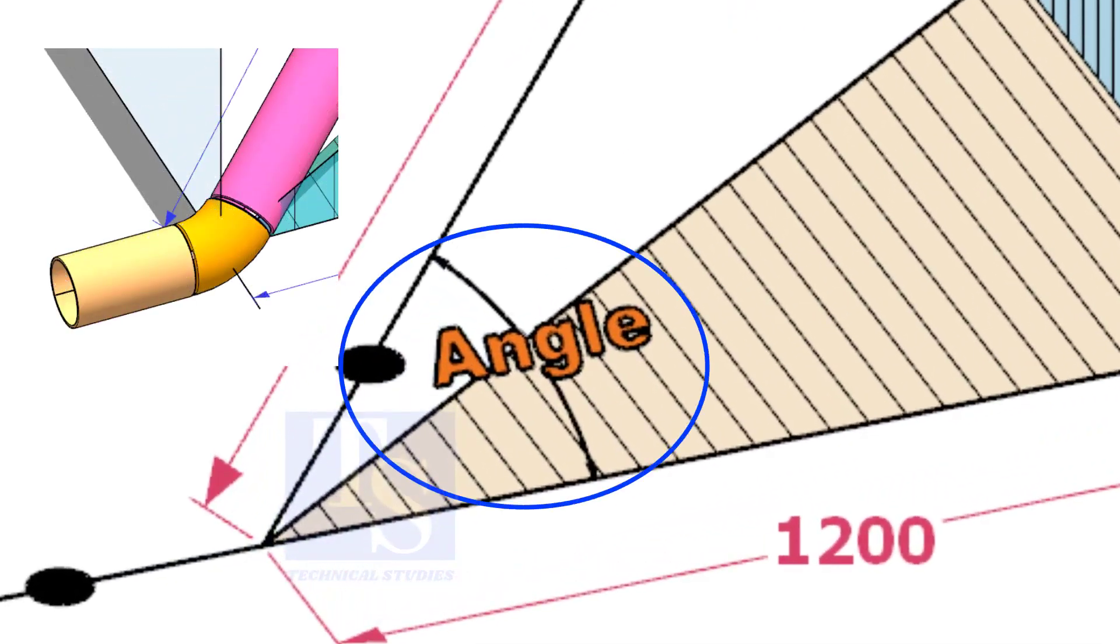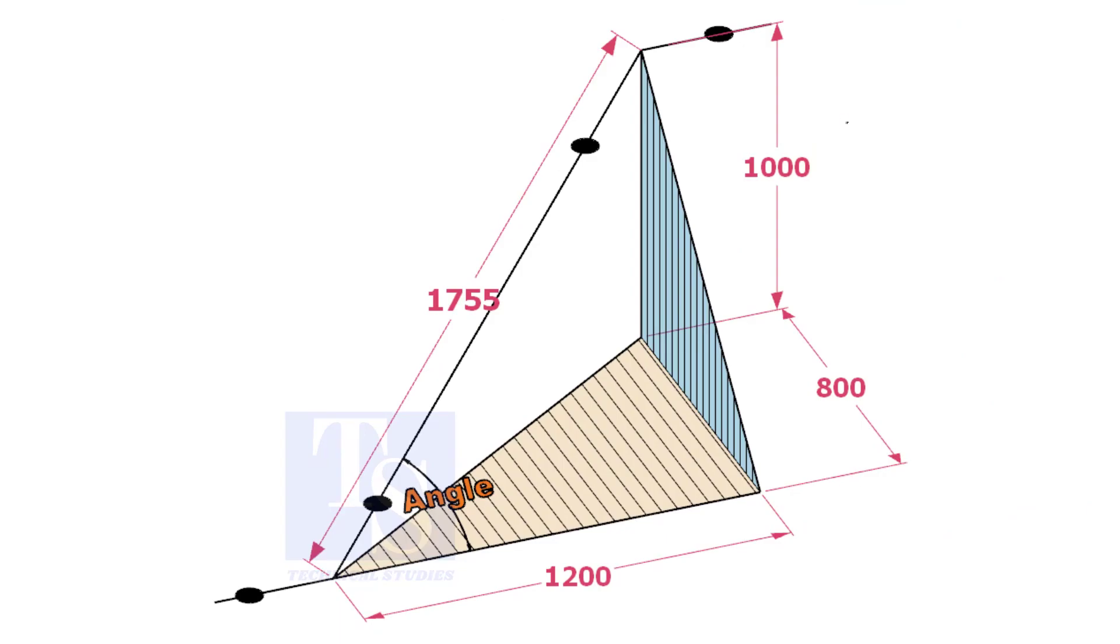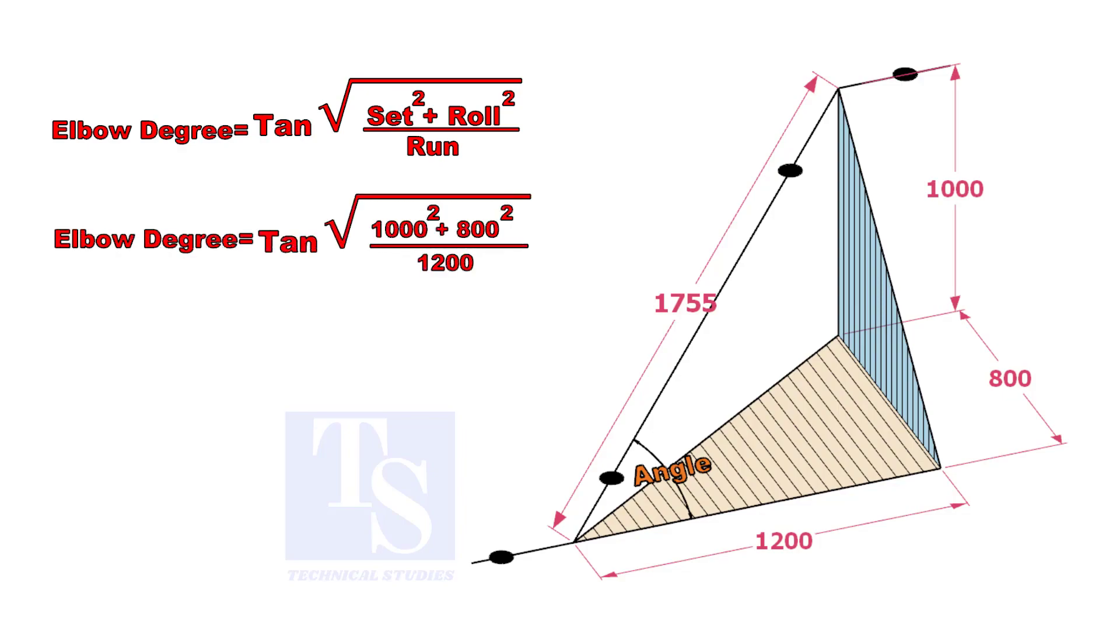Let us calculate the degree of the elbow or the including angle. The formula is tangent inverse of the square root of set squared plus roll squared, divided by run.